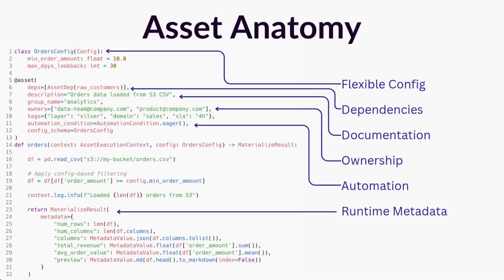Here's the thing about data platforms — they're complicated. Data flows from point A to point B, but when something breaks, and it will break, you're left playing detective instead of solving an actual problem. We've all been there asking questions like: who built this? What does this data actually represent? When was it last updated? And is this the table that finance uses for their quarterly reports? Asset metadata in Dagster solves this by giving every piece of data context, ownership, and history.